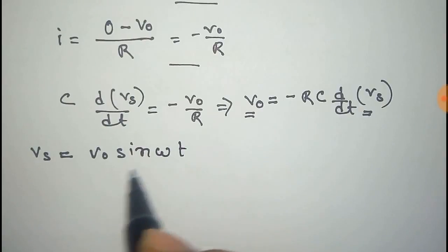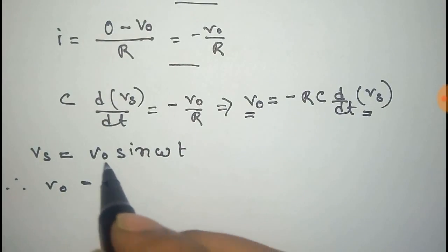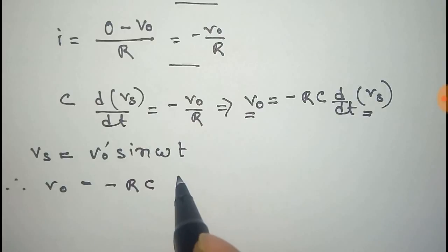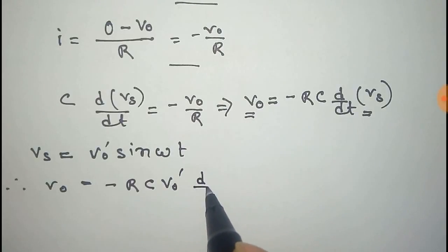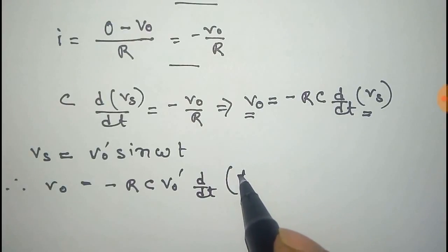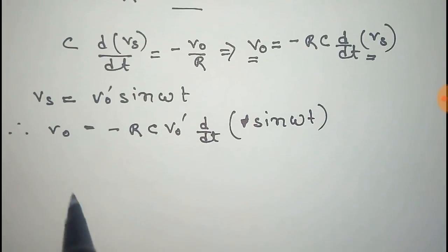If we take the input as a sine wave, that is Vs = V' sin(ωt), then the output Vo will be -RC times the derivative of Vs. That is V' constant, derivative of sin(ωt), which is ω.